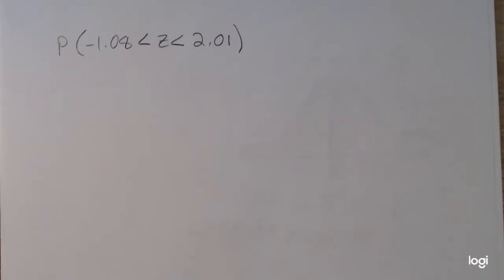I'm going to use the standard normal table to find the area between negative 1.08 and 2.01. Now that's also the same thing as finding the probability of getting a z-score between negative 1.08 and 2.01.